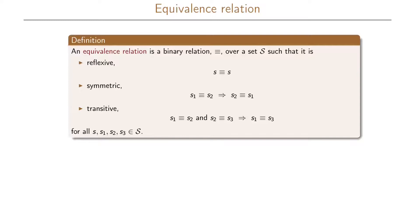Let us formalize this by defining an equivalence relation. An equivalence relation is a binary relation over a set S such that it is reflexive — S is equivalent with S — it is symmetric, meaning if S1 is equivalent with S2 then S2 is also equivalent with S1, and it is transitive, meaning if S1 is equivalent with S2 and S2 is equivalent with S3 then S1 is equivalent with S3. This should hold for all elements in the set S.